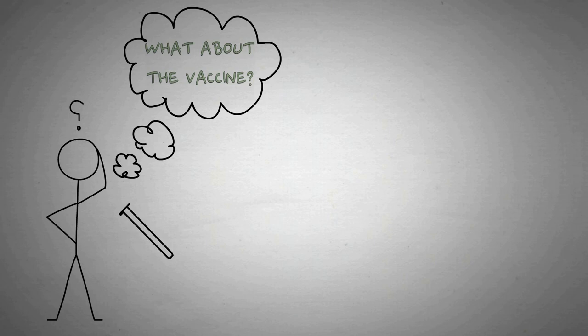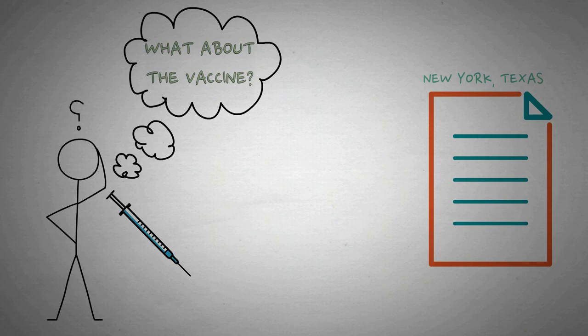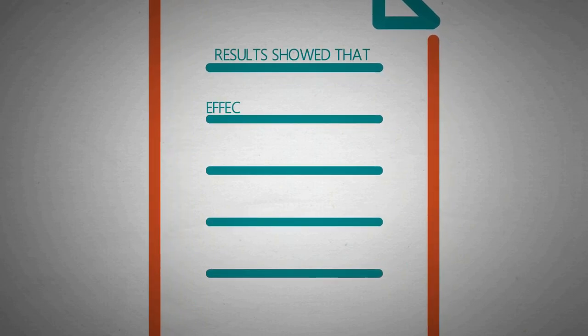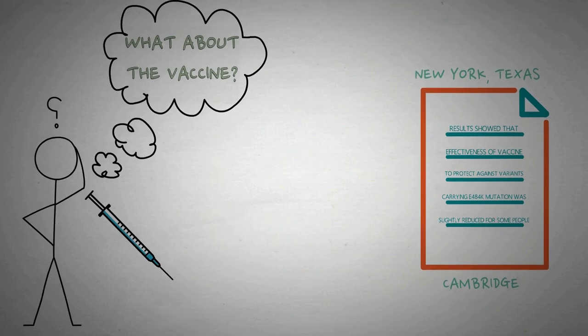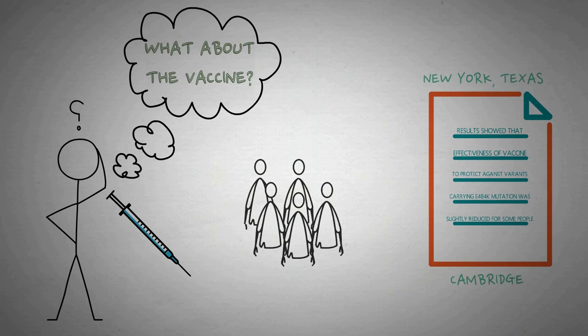Here things are a bit uncertain. To find the effectiveness of existing vaccine options against the new strain, studies were carried out in New York, Texas, and Cambridge. They tested the antibodies of newly vaccinated citizens against the new COVID-19 strain. Results showed that while the effectiveness of the vaccine against variants carrying the E484K mutation was slightly reduced for some people, it was still within an acceptable level. However, these studies are based on a very small sample size and any conclusions are not definitive.